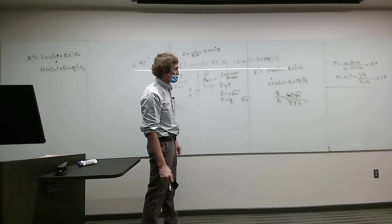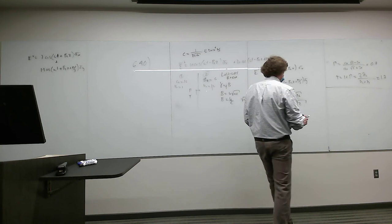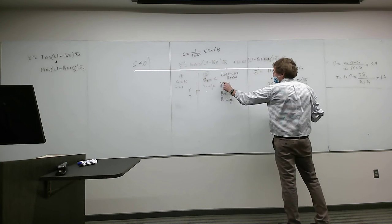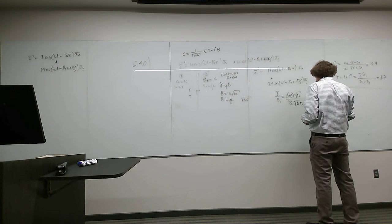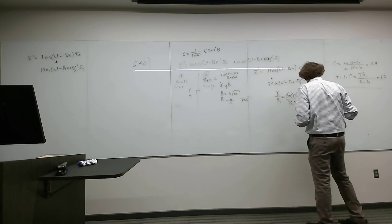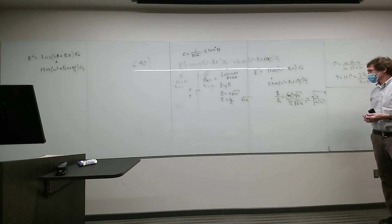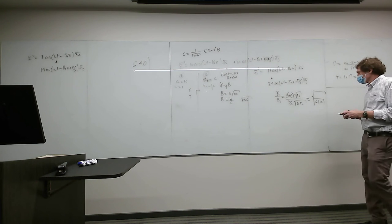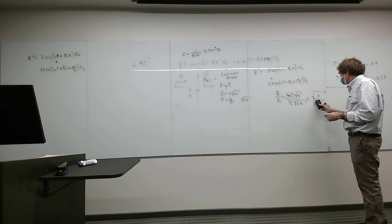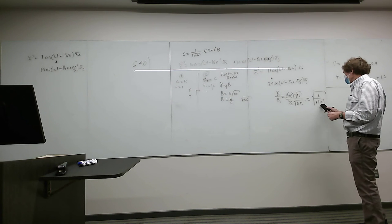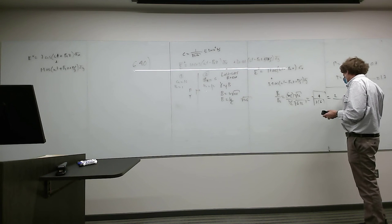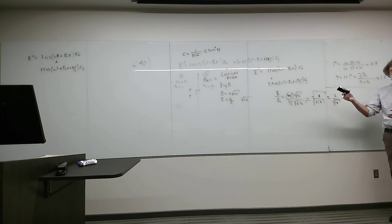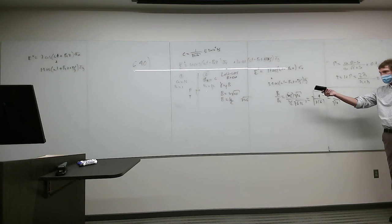A student correctly points out that for beta, you use mu-relative times epsilon-relative, not mu-relative over epsilon-relative. So for region 1 with mu-r=1 and epsilon-r=16, and region 2 with mu-r=12 and epsilon-r=6, the ratio beta-1 over beta-2 equals the square root of 16 over the square root of 72 — simplifying by dividing numerator and denominator by 2 twice gives 2 over the square root of 18.